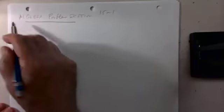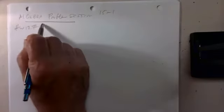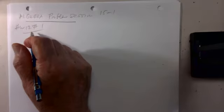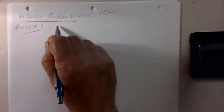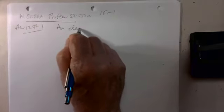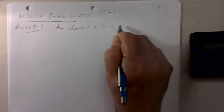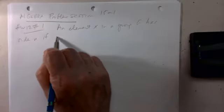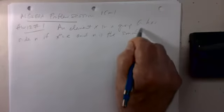So this is homework 12, number one. We have SL₂(ℤ), we have matrices, and we want to compute the order. We say that an element x in a group G has order n if x to the n is the identity, and n is the smallest positive integer with this property.